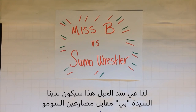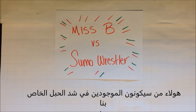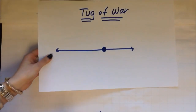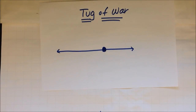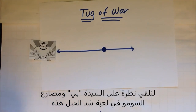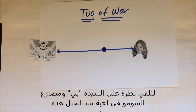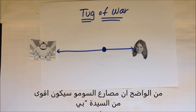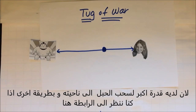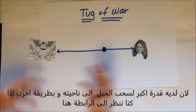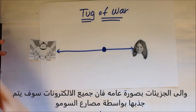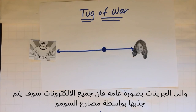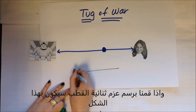In this tug-of-war we're going to have Miss B versus the sumo wrestlers. If we look at Miss B and the sumo wrestler in this game of tug-of-war, clearly the sumo wrestler is going to beat Miss B, because he has more ability to pull the rope closer to him. Looking at a bond, all of the electrons are being hogged by the sumo wrestler, so the dipole moment would point toward him.